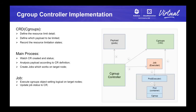Now let's talk about the implementation of the cgroup controller. First, for the CRD definition, it defines the resource details — which node the resource belongs to, the type of resource, and the resource ID. For example, we can define one resource as the blkio limitation for the rootFS of node 1. The CRD also defines the target payload, including deployment, StatefulSet, gaming set, and pods, and also needs to specify the target pods and target container name. Additionally, the CRD can record the resource limitation status, so the controller can check whether the limitation setting has completed or not.